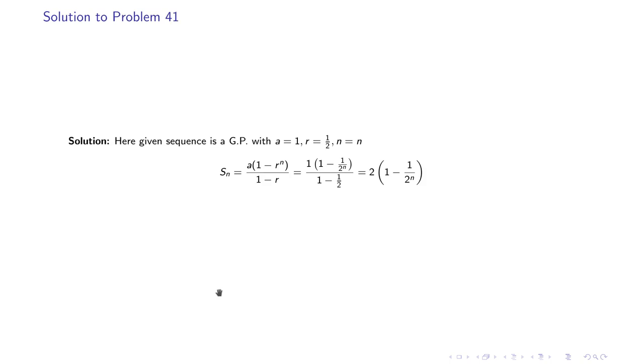Number of terms is n. So we have a = 1, r = 1/2, and n = n. So sum of this series would be a(1 - r^n)/(1 - r). So that leads us to 2(1 - (1/2)^n).